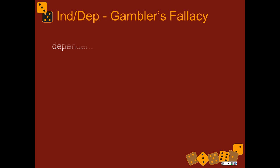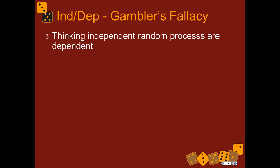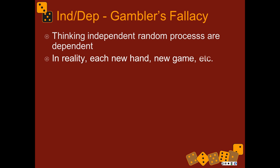Independence and dependence are prominent in what's called the gambler's fallacy. The gambler's fallacy is a failure to think accurately about independent and dependent random processes. This only works for certain gambling games. In reality, each new hand or game of most gambling games is independent of all the last ones.